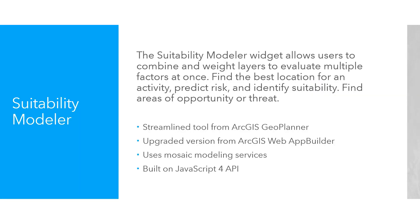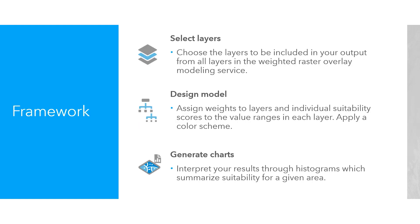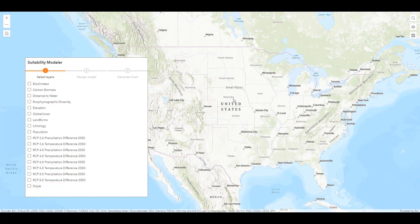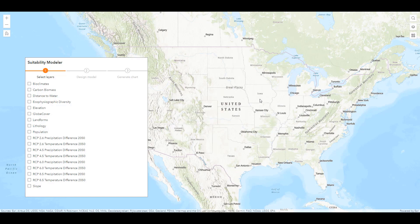This widget allows users to combine and weight different layers to evaluate multiple factors at once. Suitability models help answer questions like: where is there the greatest risk for fire or flood? Where is the optimal location for a commercial development? Where is the best area to practice habitat conservation? The answers to these questions depend on input data and the criteria defined around that data. Let's build out an example of a habitat suitability model. In this application, we have a map and the Suitability Modeler widget with Weighted Raster Overlay Modeling Service published by Esri called the Ecophysiographic Diversity Model.